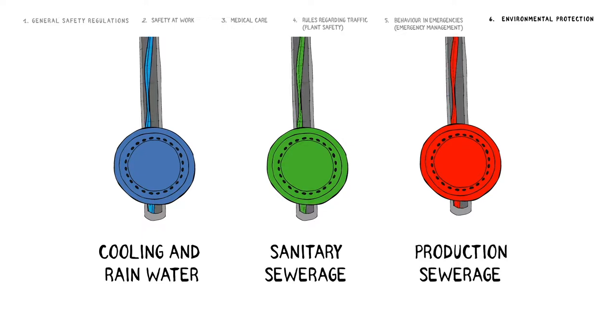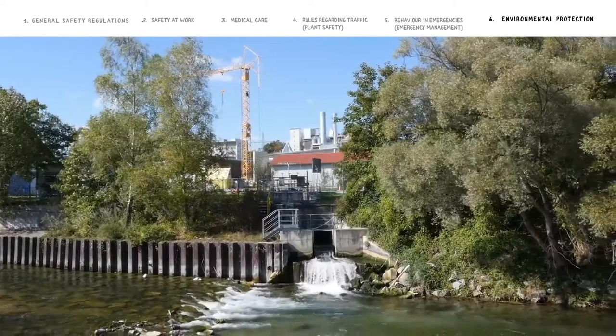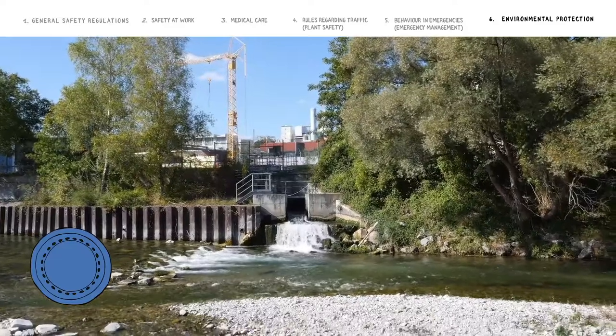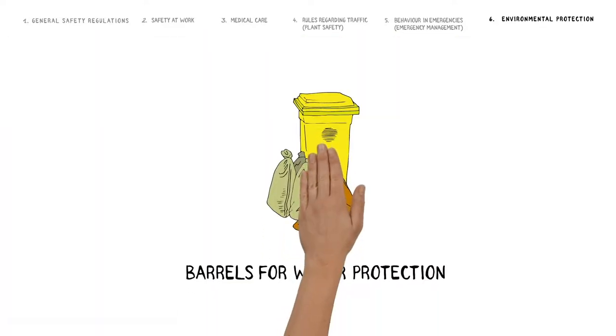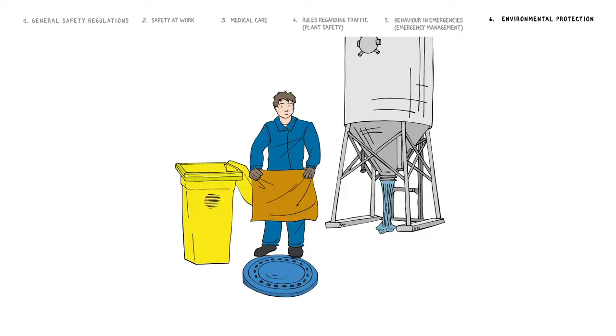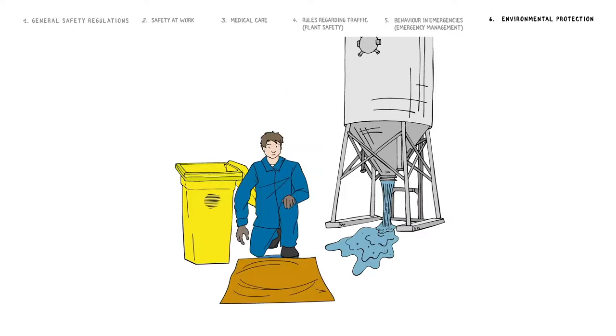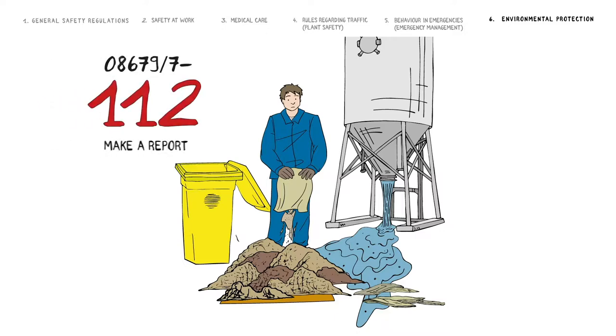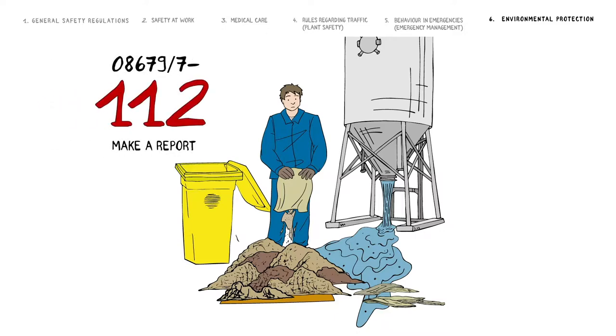In the event of a substance leak, it is particularly important to protect the river and therefore to secure the blue duct. For this purpose, there are yellow water pollution control barrels located at the chemical park site. Should substances leak, the drain inlets such as gullies or duct covers must be covered with the tarpaulins and sandbags from the water pollution control unit. However, do not expose yourself to a dangerous situation. Immediately report the substance leak on the emergency number 112.